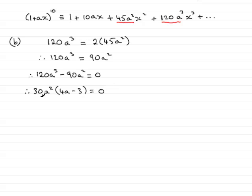So we have several factors all multiplied together to equal zero. 30 can't be equal to zero. This is a times a, so that would mean that a could equal zero. Or we could have this other factor, 4a minus 3, equaling zero. Therefore, a equals zero, or by adding 3 and dividing both sides by 4, a would equal 3 quarters.